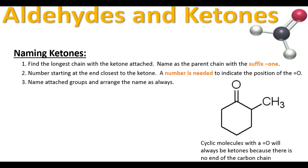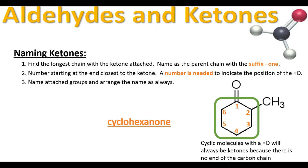You can also have ketones on cyclic alkanes. As a side note: if you ever have a double bonded oxygen on a cyclic ring, it has to be a ketone, since there's no end to the chain, so it will never be an aldehyde. The backbone is the cyclic ring — it's six carbons long, so it's a cyclohexane. Since there's a ketone on it, we call it cyclohexanone. The ketone must be carbon number one, so you don't need to state that, but you do need to number for the methyl group attached. The final name is 2-methylcyclohexanone.